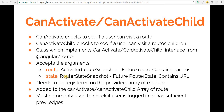Once we've created those guards, we can add them to the canActivate or canActivateChild property arrays in the route configuration object. These are mostly used for checking if the user has logged in and has sufficient privileges to navigate to a particular route.